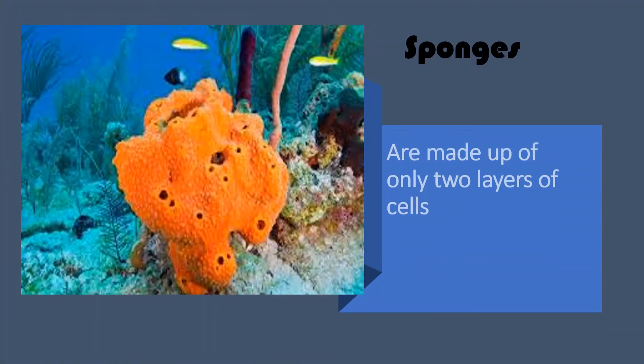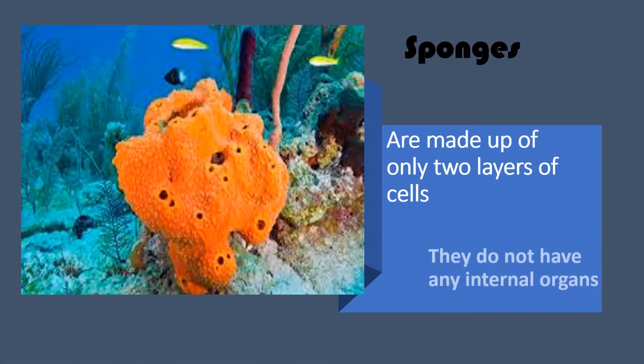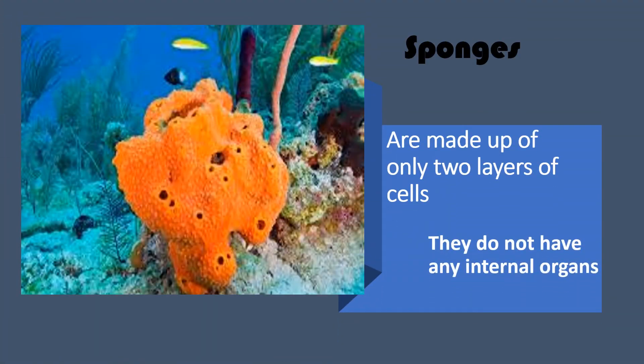A sponge is a simple multi-cellular invertebrate. They are made up of only two layers of cells. They do not have any internal organs, which means that a sponge does not have a brain or any nervous system.